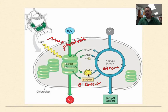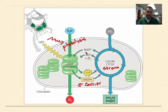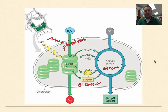When ATP releases its phosphate to provide energy, it becomes ADP. When NADPH drops off its electron, it becomes NADP+. Both ADP and NADP+ cycle back to the light reactions to get recharged and return to the Calvin cycle. That is photosynthesis, made as simple as possible.